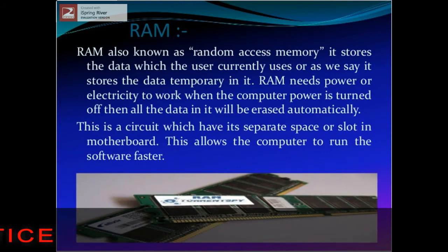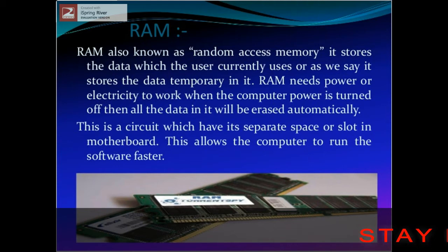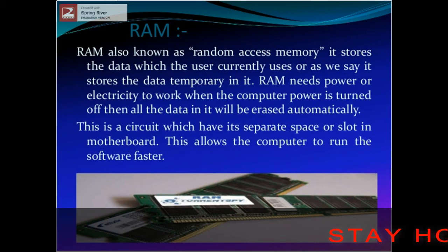RAM is also known as random access memory. It stores the data which the user currently uses; that is, it stores the data temporarily. When the power or electricity is on, the computer stores the data. But as the computer power is turned off, all the data in it will be erased automatically.